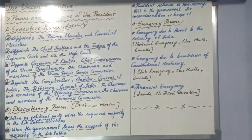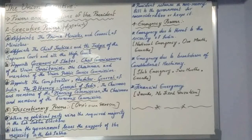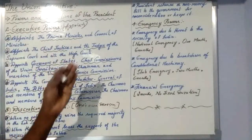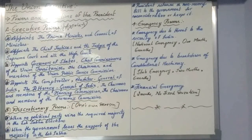The third discretionary power concerns non-money bills — ordinary bills. When a bill is sent to the president for reconsideration, he may ask parliament to reconsider it. At the same time, if he feels that particular bill is not appropriate for the current situation, he can keep that bill — effectively pocket it — and no member of parliament has the right to question him. These are the three discretionary powers of the president.